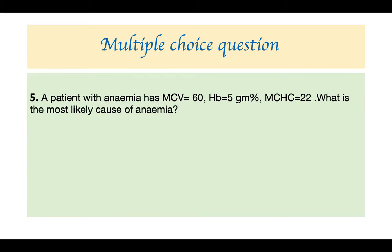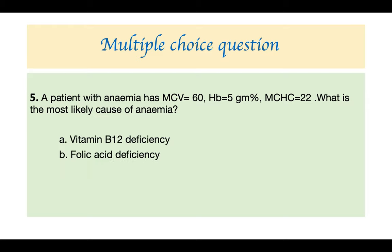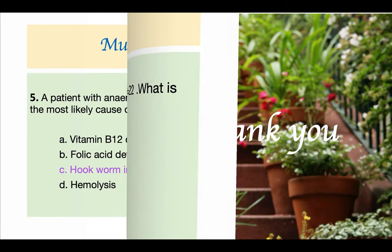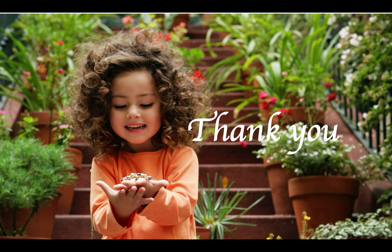A patient with anemia has MCV of 60 (reduced; normal 88–96) — microcytic. MCHC of 22 (less than 33) — hypochromic. Microcytic hypochromic anemia: the most likely cause is iron deficiency, though thalassemia, sideroblastic anemia, or anemia of chronic disease are possibilities. In developing countries iron deficiency is the most important cause. Vitamin B12 deficiency — no. Folic acid deficiency — no. Hookworm infestation — yes, causes iron deficiency. So the answer is hookworm infestation. Thank you very much, hope this video was useful.